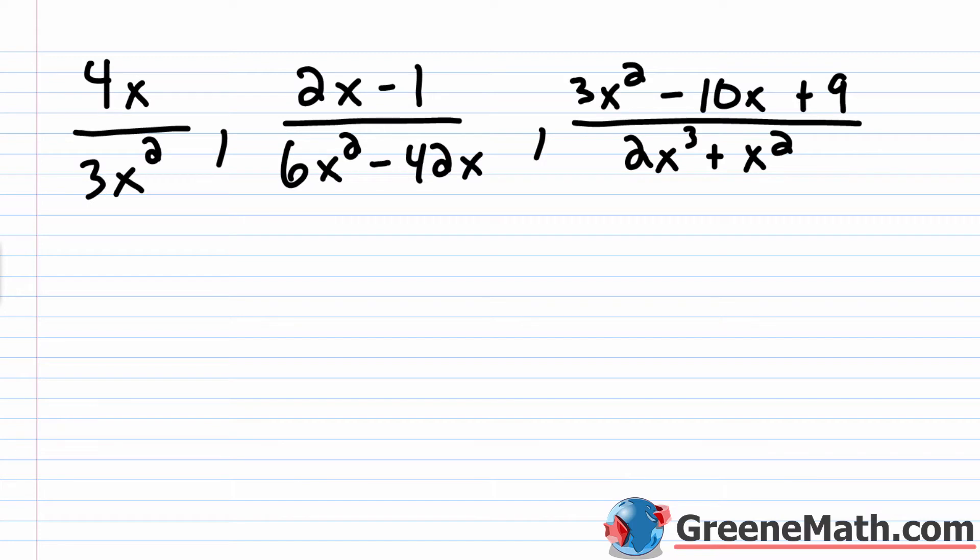So the first thing you'd really want to do is factor everything. Is there anything I can cancel or make simpler when I look at each rational expression? This one right here, obviously, you could cancel this with this. So I could really write this as four over three x.